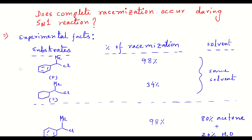Here is a compound: the plus enantiomer undergoing SN1 reaction gives 98% racemization. And in another instance, the plus enantiomer of this particular compound gives 34% racemization during an SN1 reaction. Both these reactions are performed in the same solvent where water is acting as the active nucleophile, giving rise to the corresponding alcohols. We can clearly see that the degree of racemization is deviating from 100% — to 98% and 34% respectively.